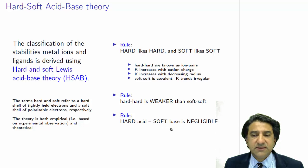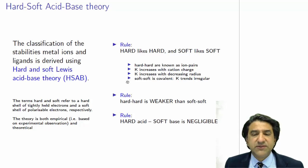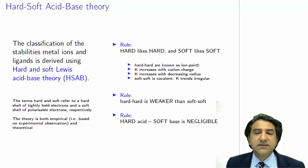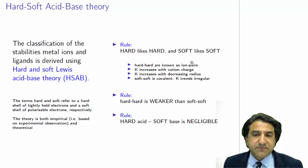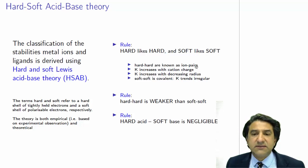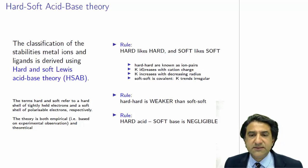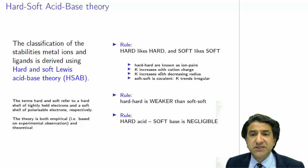A hard acid with a soft base is negligible. Now, most of it is in the first rule. Hard-hard interactions are known as ion pair interactions. An ion pair involves something that's quite highly charged — for example, something like Fe³⁺ with something clearly negatively charged, like nitrate (NO₃⁻) or phosphate (PO₄³⁻). Hard-hard interactions are like ionic interactions — ions like each other, so hard likes hard.